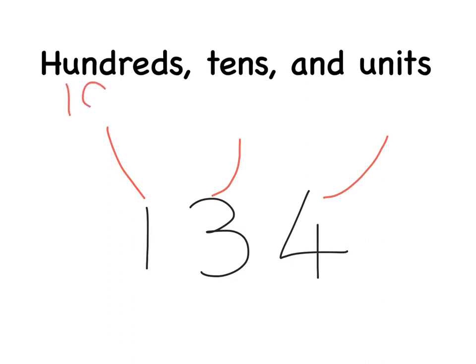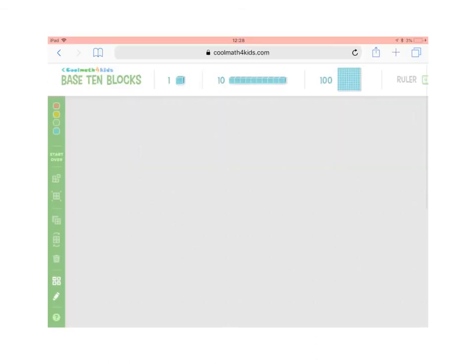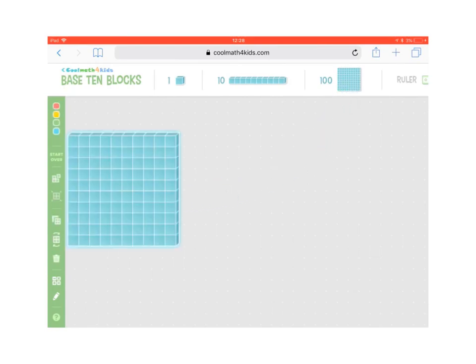100 can also be written like this. 3 tens is also known as 30, and 4 units is a 4. So we can split 134 into 100, 30, and 4. Visually, with our base 10 blocks, it would look like this.